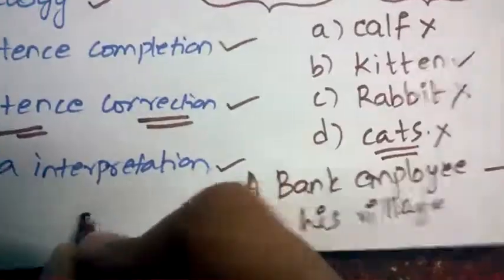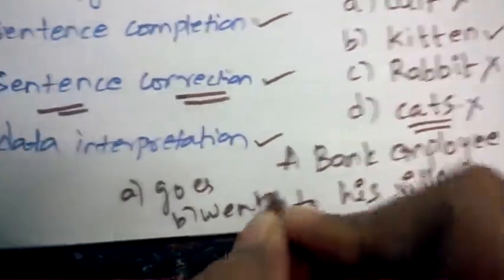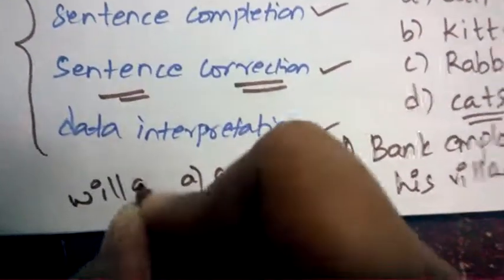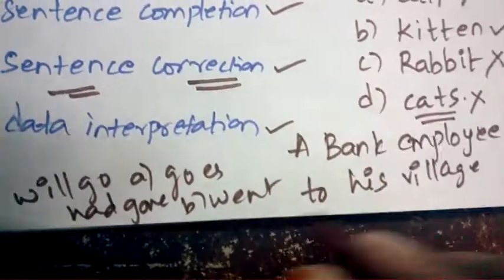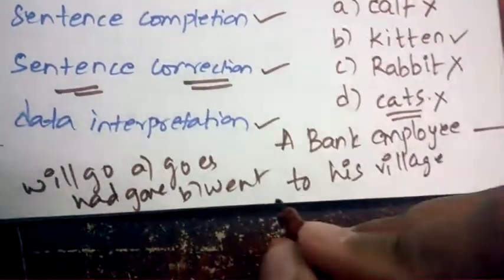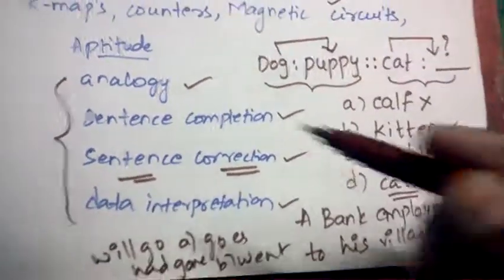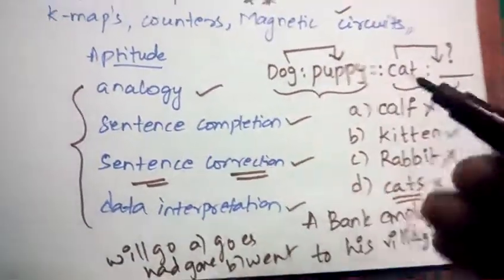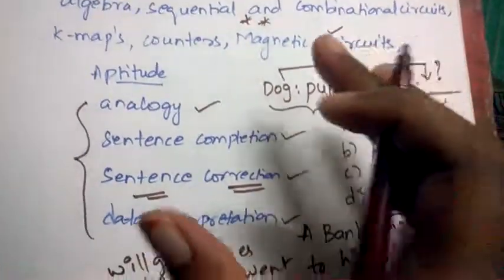A bank employee [blank] to his village. Options will be very confusing: goes to his village, went to his village, will go to his village, had gone to village - like this the options will be given which will be very close. So you need to concentrate more on sentence correction to score high and you need to practice more and more so that you can solve the answer within minimum time possible, so that you need not mess up at the last moment.